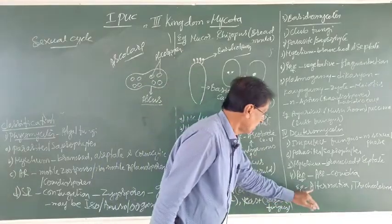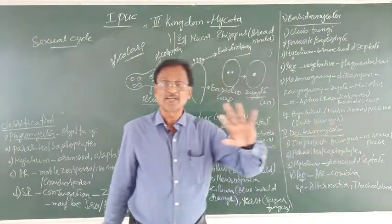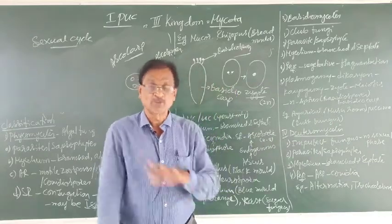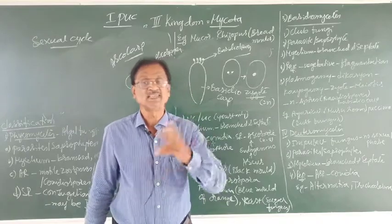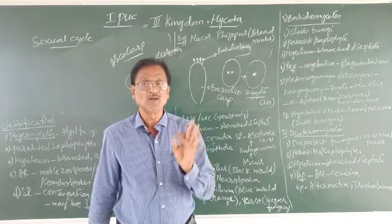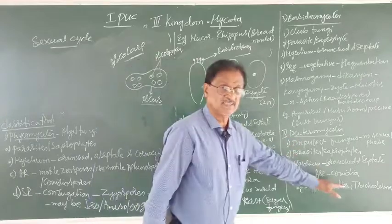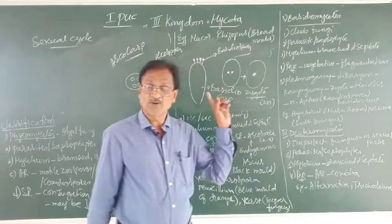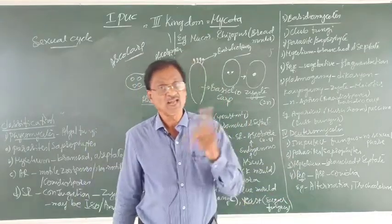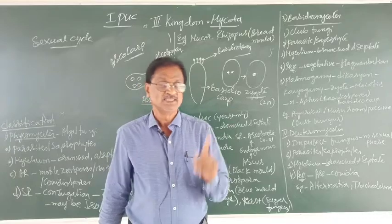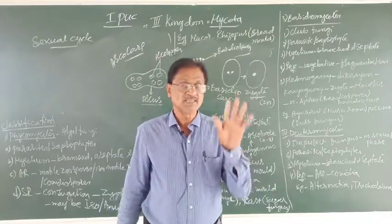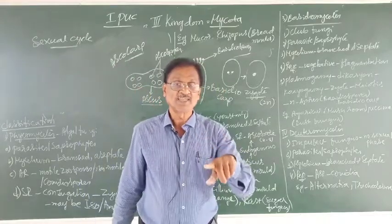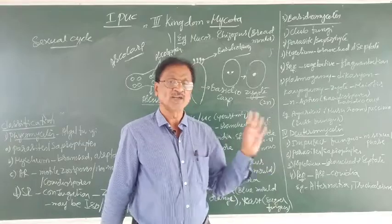The examples are Alternaria and Trichoderma. Trichoderma is a parasite which grows on the skin of humans, causing a disease called ringworm disease. So these are the four classes of Mycota or Fungi. This marks the end of the third kingdom — Mycota — under biological classification. Thank you one and all.